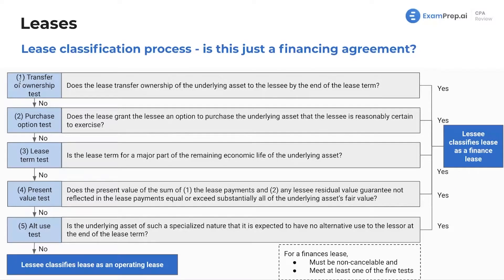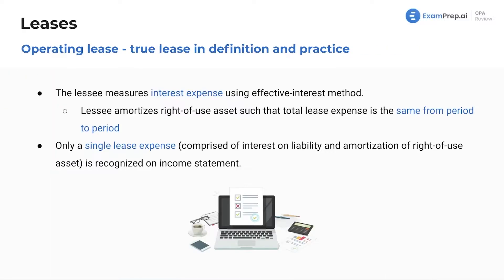We run through a five-step test and the determination is: is it a real lease? A real lease — that's my own term — is an operating lease, a true lease in definition and practice. Think of it like leasing a car: you're not trying to own it, you're just essentially renting it long-term. That's a true lease.